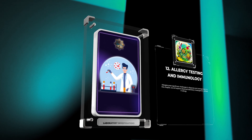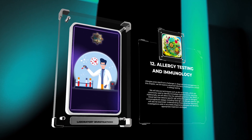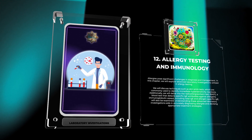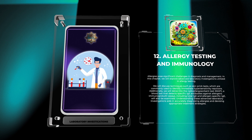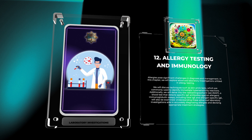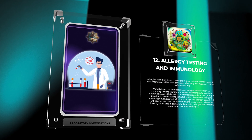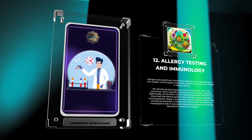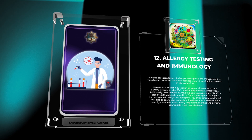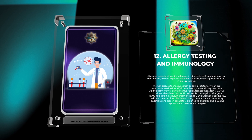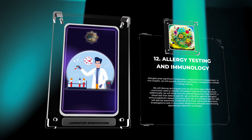Allergies pose significant challenges in diagnosis and management. In this chapter, we will explore advanced laboratory investigations utilized in allergy testing. We will discuss techniques such as skin prick tests, which are commonly used to identify immediate hypersensitivity reactions. Additionally, we will delve into the radioallergosorbent test (RAST), a blood test that detects specific IgE antibodies against allergens. Immunoglobulin assays, including total IgE and allergen-specific IgE, will also be examined. Understanding these advanced laboratory investigations aids in accurately diagnosing allergies and devising appropriate treatment strategies.